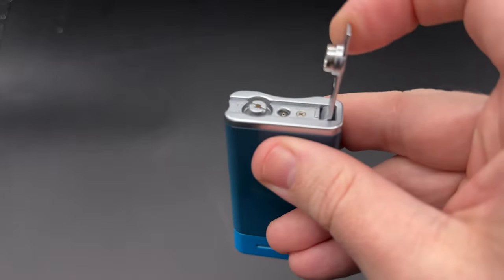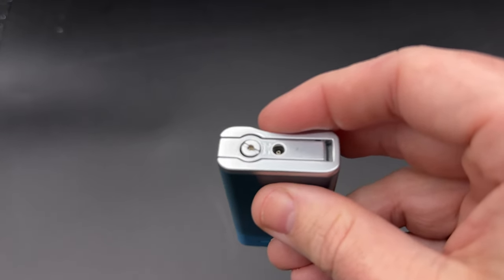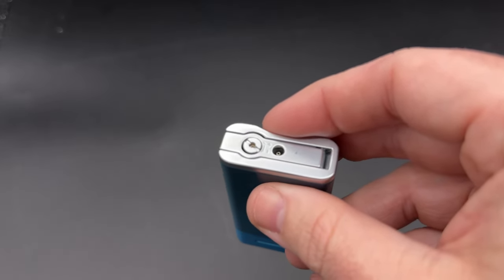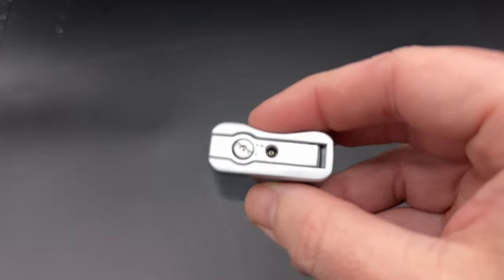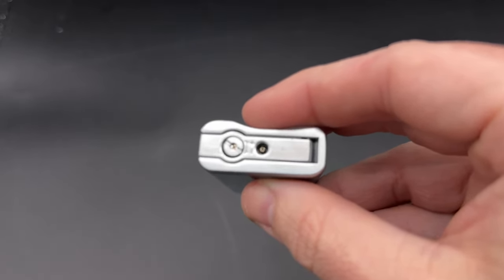Also on the base is your flame adjuster wheel, which is right there. It does require a tool, also doubles up and serves as the way that the tobacco from your punch cut gets ejected. And then right there in the middle is your fuel valve, which is how you refill the lighter.